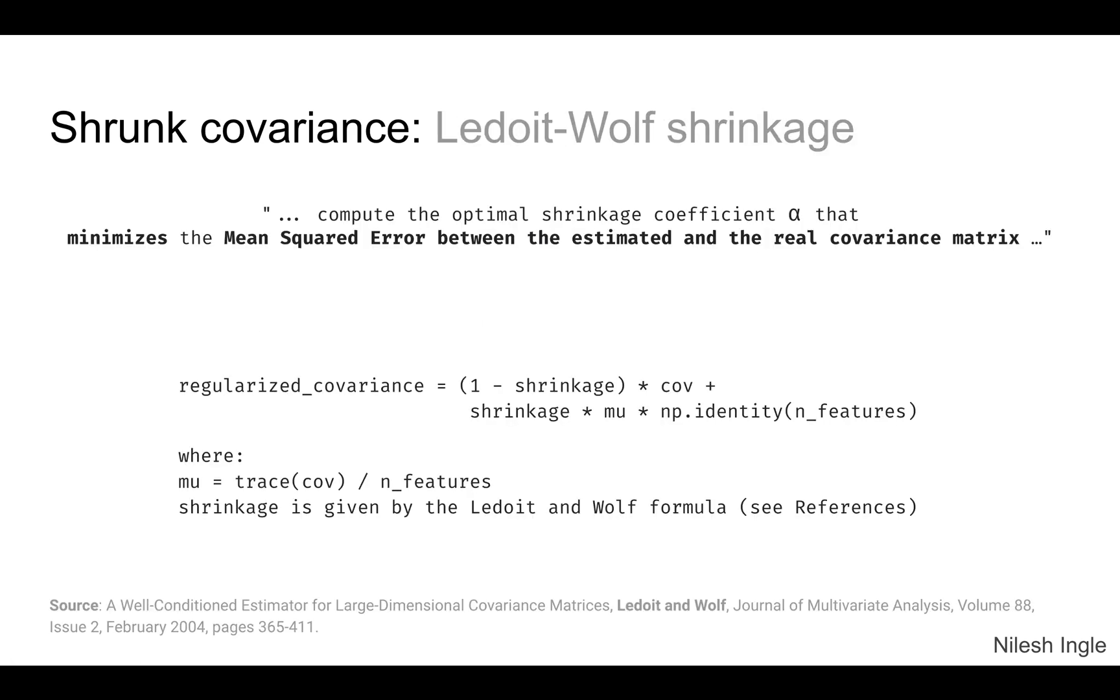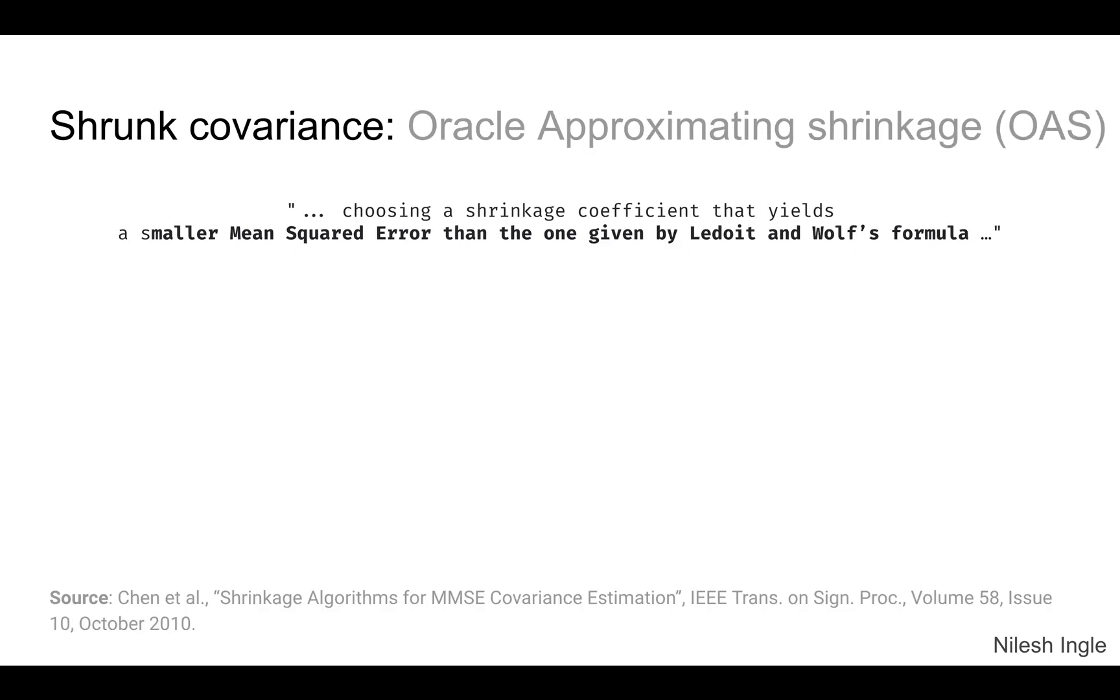The takeaway message is that this was one method and this is another method that reduces the MSE. Then there is another method that is based on top of the Ledoit-Wolf's method and this Oracle Approximating Shrinkage OAS is a method that yields a lower value for the MSE or mean squared error. Again I've listed the source here if you are interested in reading further on this particular topic. I know that I'm not going into details of these methods but if you do have any questions please let me know in the comments below.